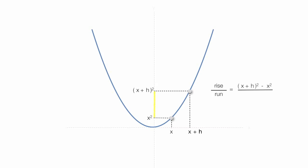The run is going to be that distance. So I have x plus h, minus x.